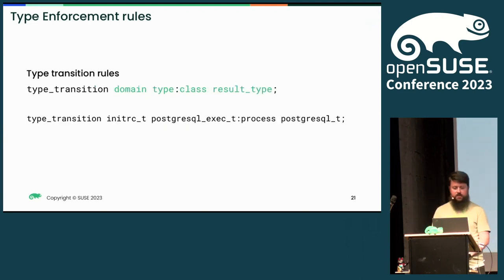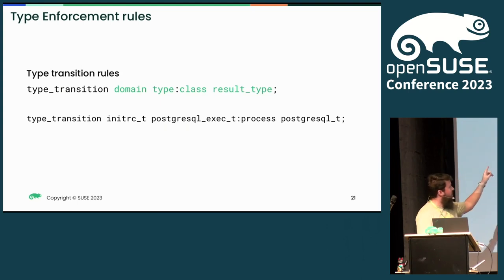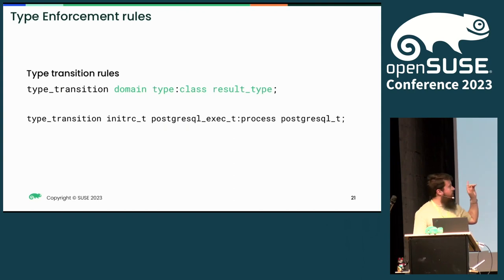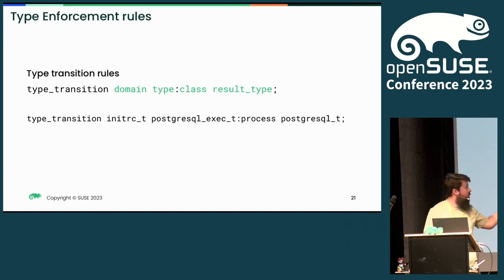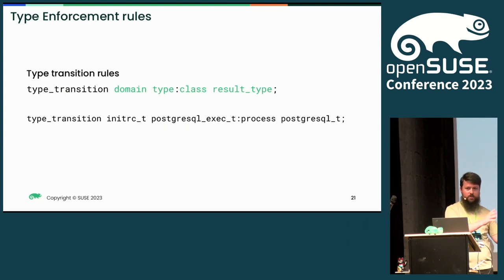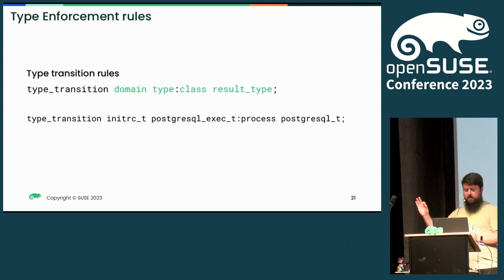To fix this, we introduce a type transition rule. When a domain executes a file of a given type, the resulting process will have a resulting type. So we say: when initrc_t executes a file of type postgresql_exec_t, the resulting process will have type postgresql_t. In this way, we've confined initrc to only do init stuff, and confined the database to only do database stuff, defining a transition path between the two.